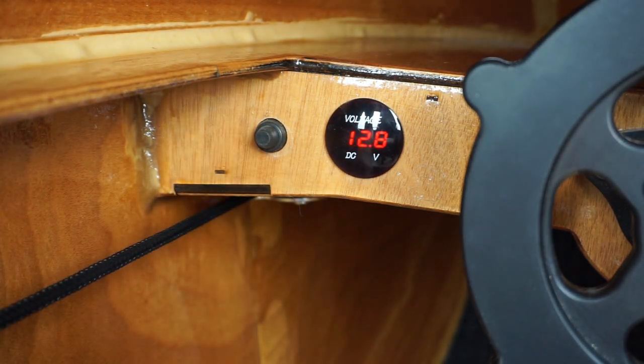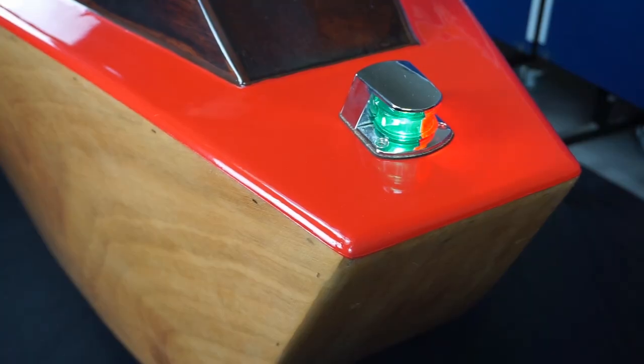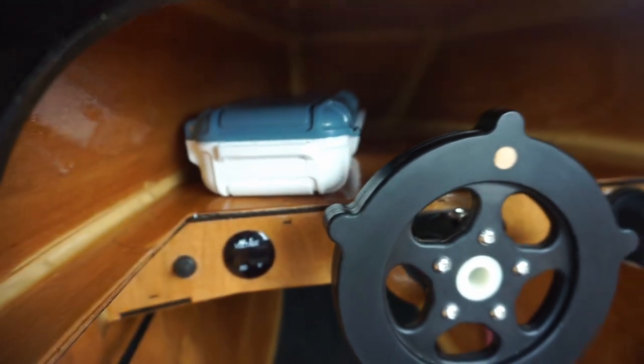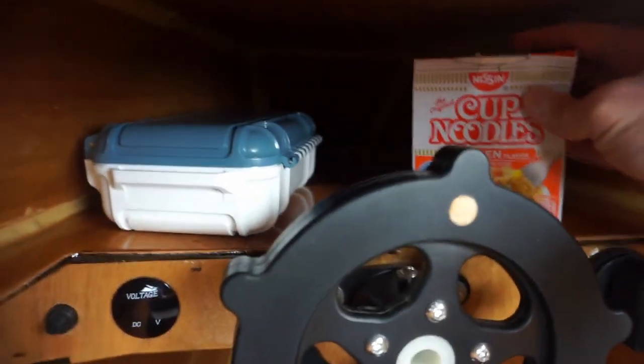I have the switch wired to turn on the voltmeter as well as the front light. Above the dash is a cubby which is great for storing small things like a dry box or your lunch.